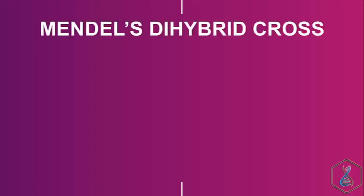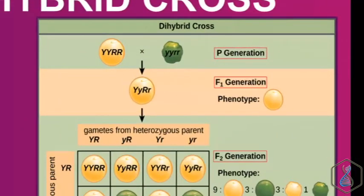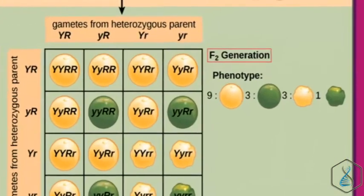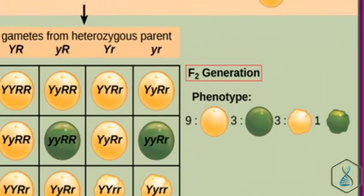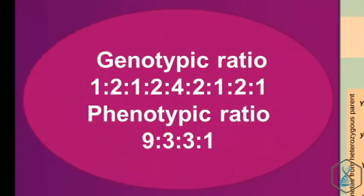Now let's look at Mendel's dihybrid cross. In Mendel's dihybrid cross, Mendel crossed a homozygous yellow-round phenotype individual with a green-wrinkled phenotype. In F1, all offspring produced are yellow-round. In F2, he obtained a ratio of 9 yellow-round : 3 green-round : 3 yellow-wrinkled : 1 green-wrinkled. The phenotypic ratio of the dihybrid cross is 9:3:3:1, whereas the genotypic ratio is 1:2:1:2:4:2:1:2:1.